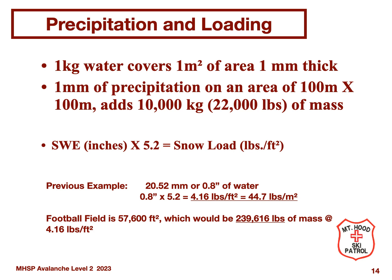It's interesting to think about loading on a slope from precipitation. One millimeter of water on a 100 by 100 slope adds over 22,000 pounds of mass to the slope. In our previous example, the SWE was 0.8 inches of water equivalent, which is equivalent to 4.16 pounds per square foot. On a football field-sized slope, this would be an additional 240,000 pounds of mass — that's a lot of extra loading.